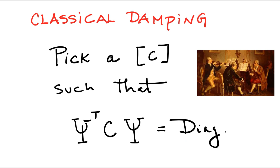It has nothing to do with classical music, but it is such that phi transpose C phi becomes diagonal. So basically, we approach the problem from the end. We say, let's pick a C such that when we do phi transpose C phi, that comes out diagonal. And we're going to call that classical damping, and a lot of nice things come out of this.